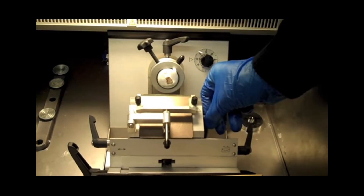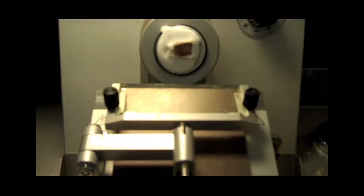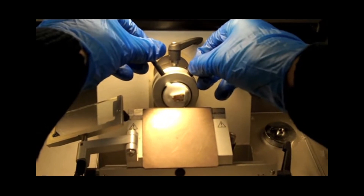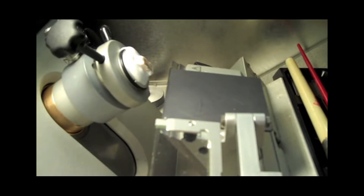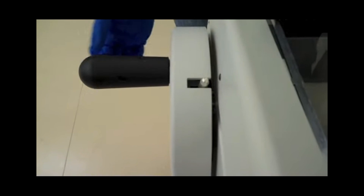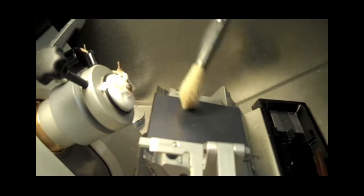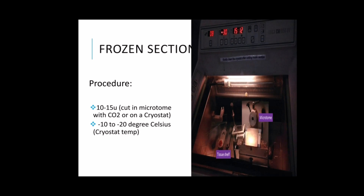For frozen sections, very thin slices around 10 to 15 microns in thickness are cut from a fresh tissue, frozen on a microtome with carbon dioxide, or on a cryostat — a cold chamber with a built-in microtome inside that maintains a temperature of negative 10 to negative 20 degrees Celsius. The frozen sections are then transferred to a slide and processed for light microscopic study, available to be read by the pathologist within 5 to 15 minutes. The pathologist then calls the surgeons in the OR to indicate whether it is benign or malignant and whether to remove the entire body part or not.